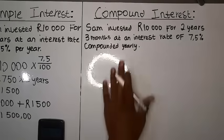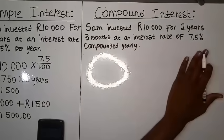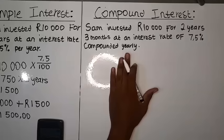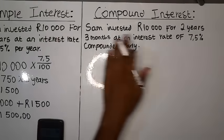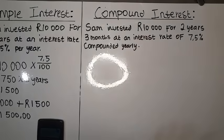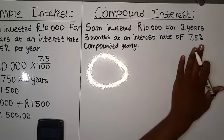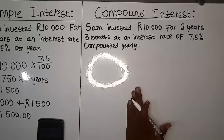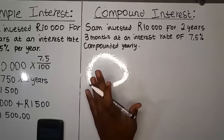In compound interest, Sam invested 10,000 for two years and three months at an interest rate of 7.5 percent compounded yearly. The scenarios are similar — the amount invested is equal — but the period is different: here it's two years and three months. The interest rate is also the same, but the key difference is that this is compound interest, not simple interest.